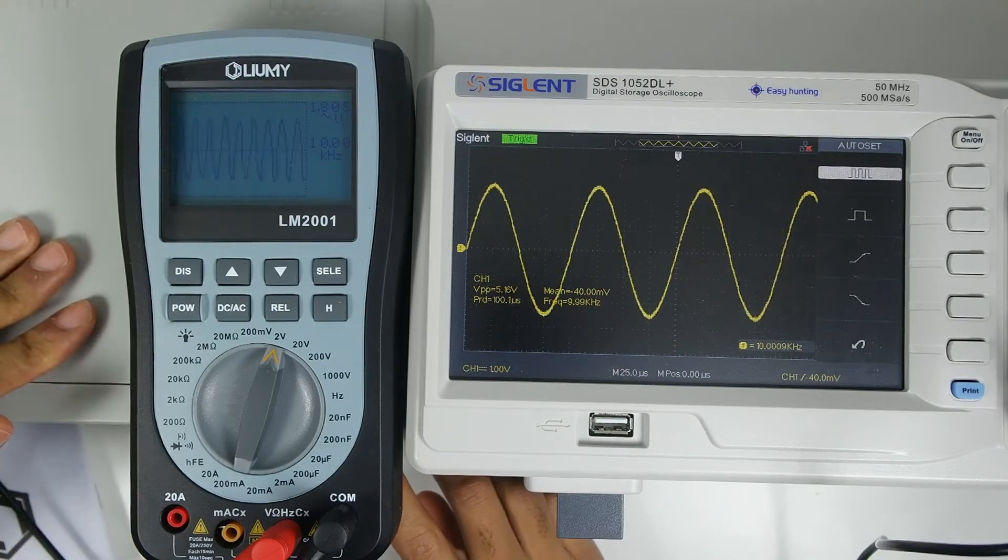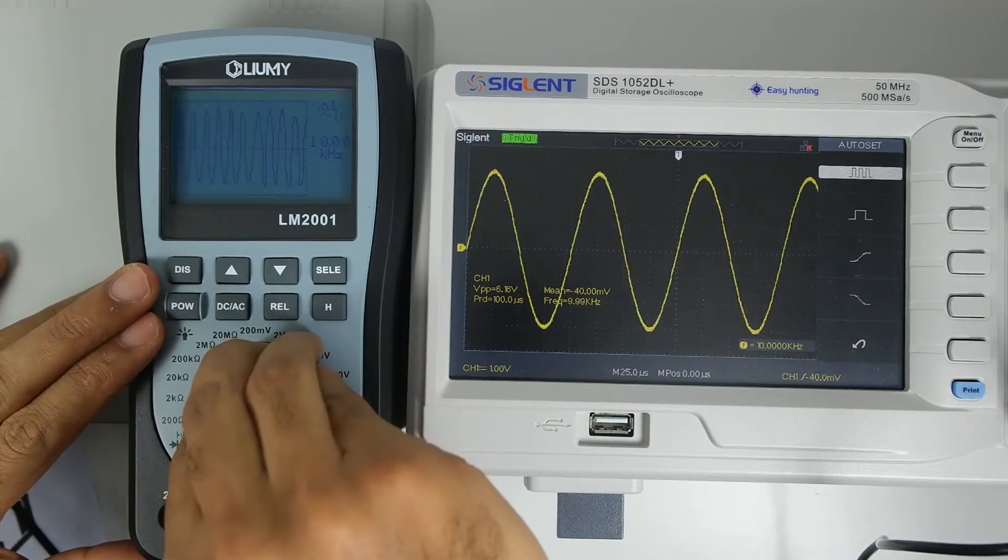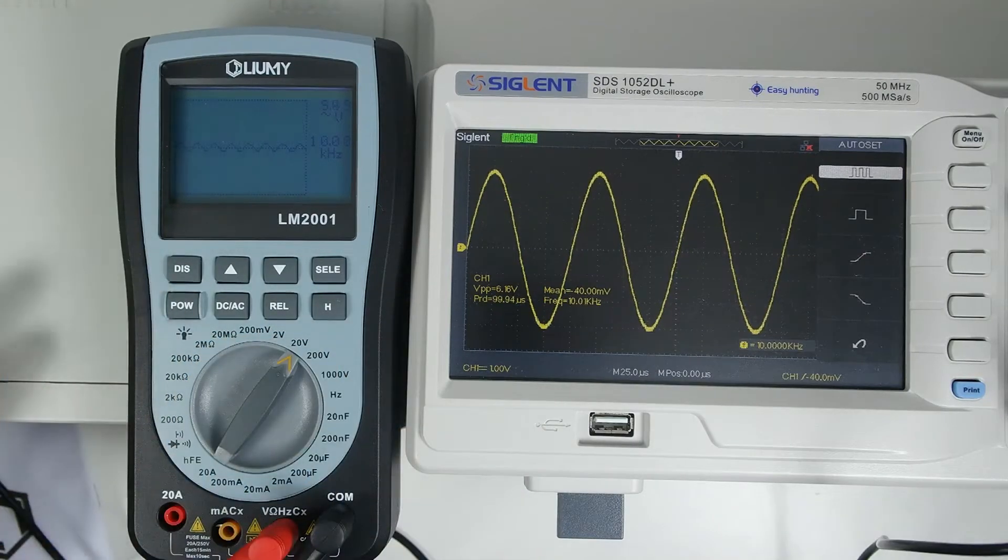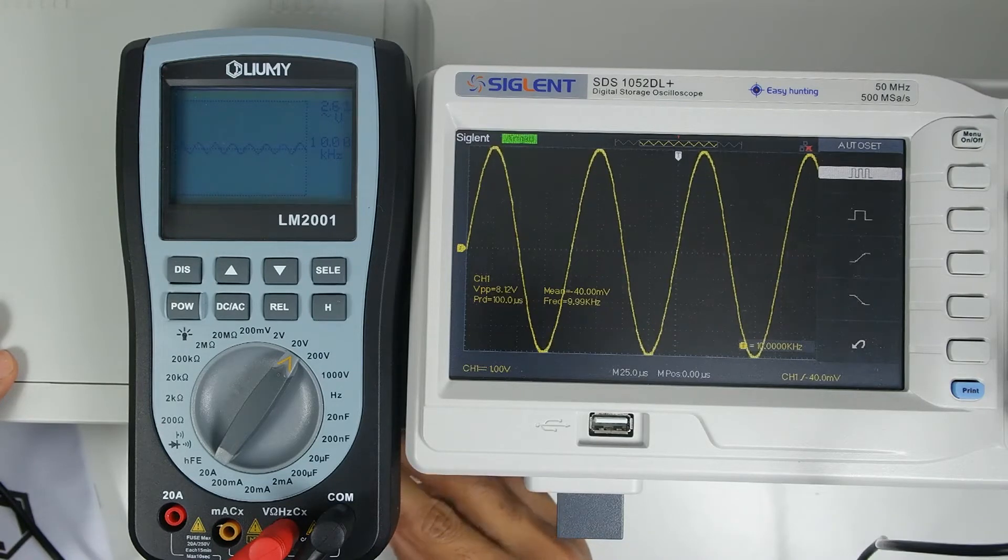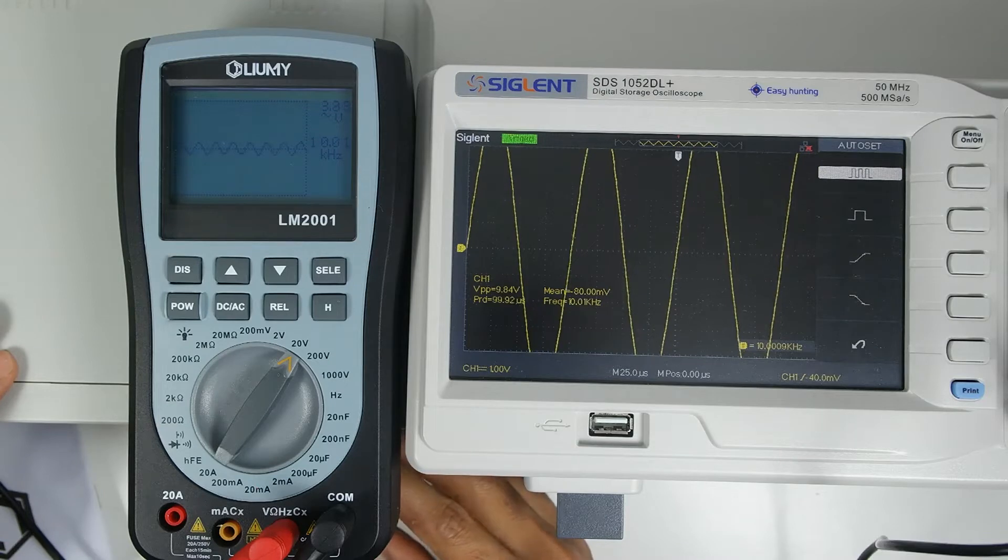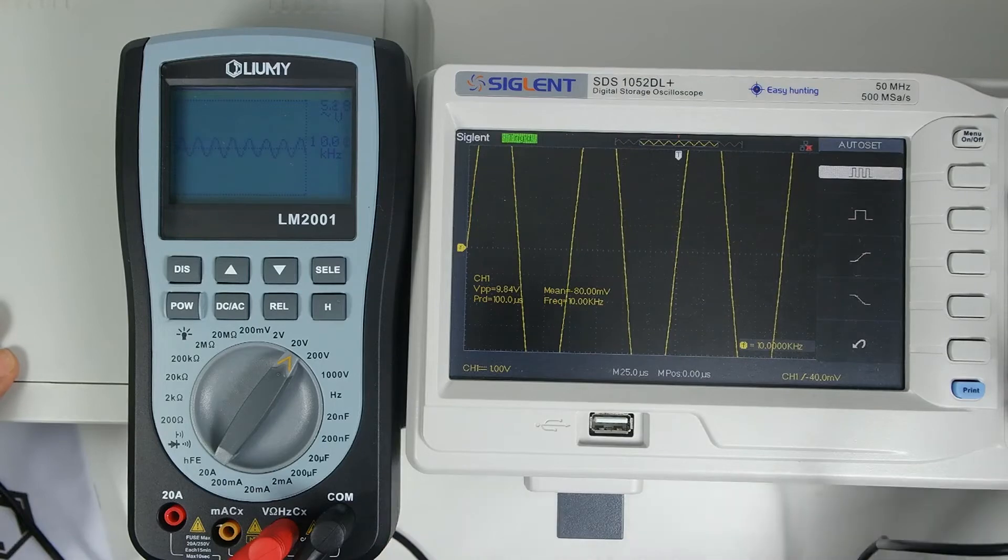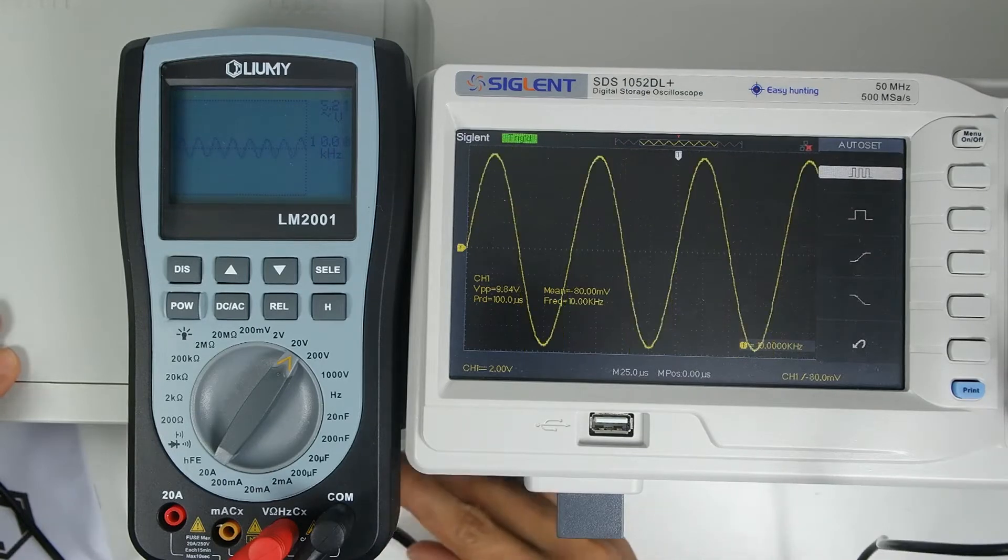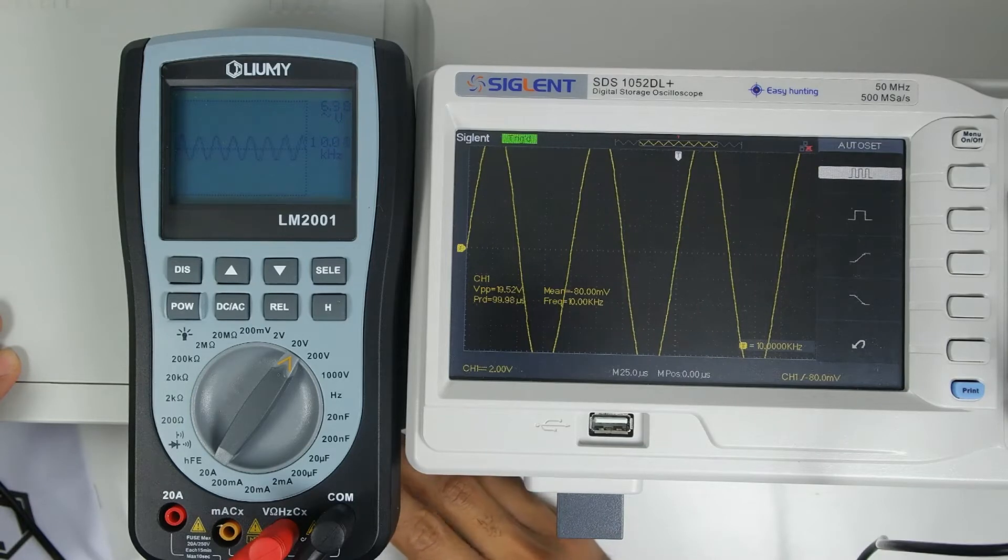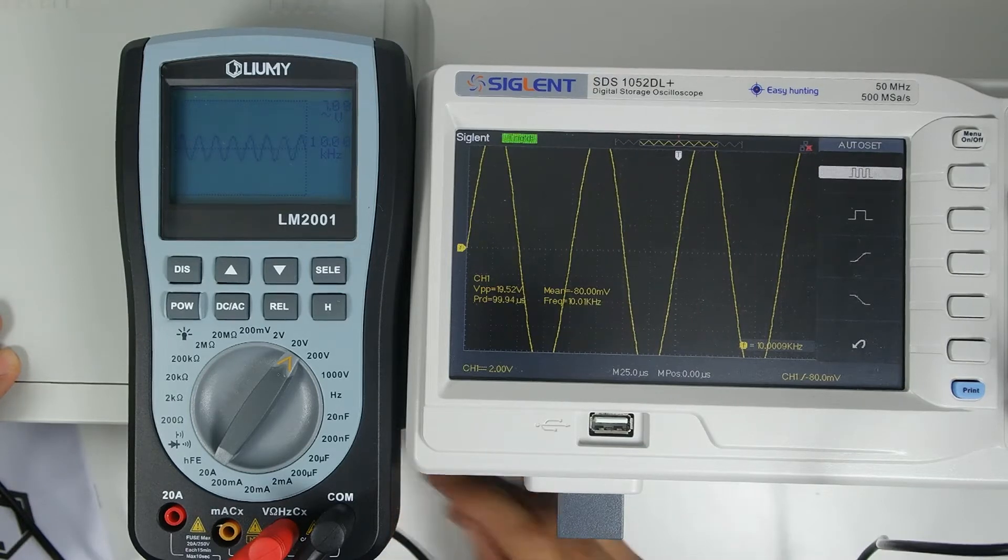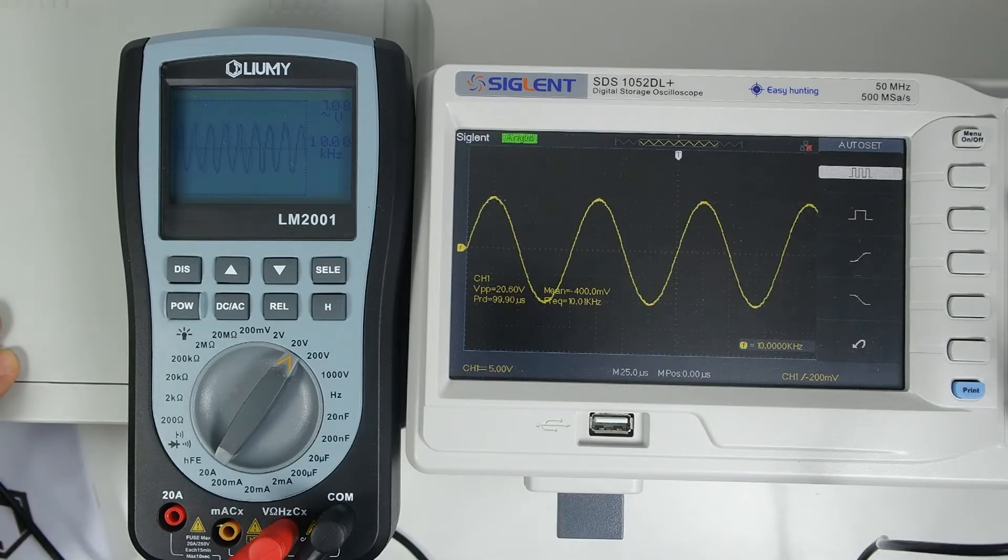Here I'm changing the amplitude to see how the multimeter reacts to changes in amplitude. It seems that once we change the amplitude, we need to re-auto-range the multimeter.